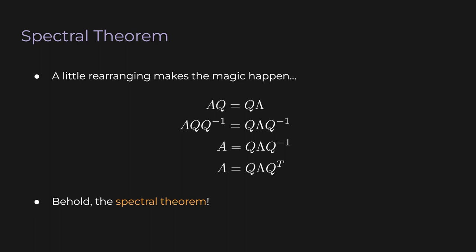And behold — the spectral theorem. The spectral theorem says that any real symmetric matrix A is equivalent to the product of these three simple matrices composed of all the eigenvectors and eigenvalues: A equals Q Lambda Q transpose. This is one of the most important theorems in linear algebra. And look how short the proof is — sure, we had to spend some time building up tools and proving smaller properties, but once we had that foundation, the proof of the spectral theorem was only four lines.